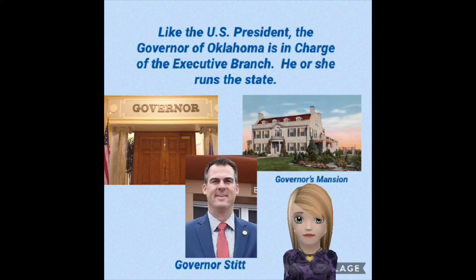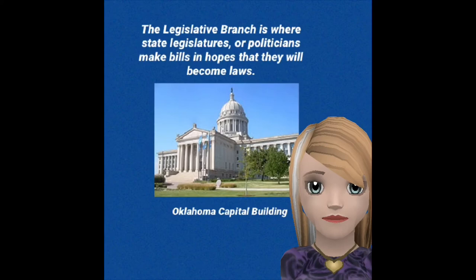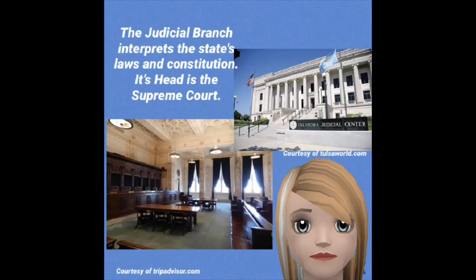Like the U.S. president, the governor of Oklahoma is in charge of the executive branch. He or she runs the state. The legislative branch is where state legislators or politicians make bills in hopes they will become laws. The judicial branch interprets the state's laws and constitution. Its head is the Supreme Court.